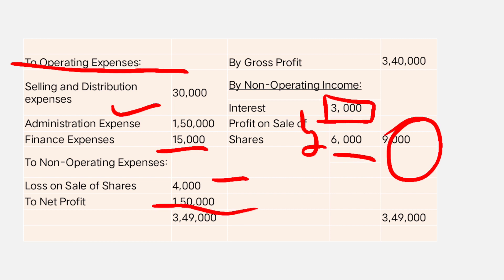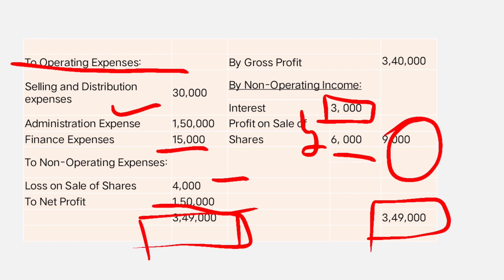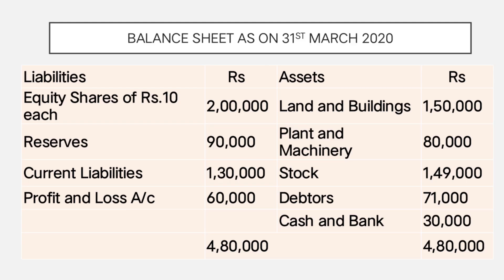The net profit is 1,50,000. Now the balance sheet as on 31st March 2020: liabilities side has 20,000 equity shares of rupees 10 each totalling 2 lakh, reserves 90,000, current liabilities 1,30,000 (including creditors, bills payable, bank overdraft), and profit and loss account 60,000.